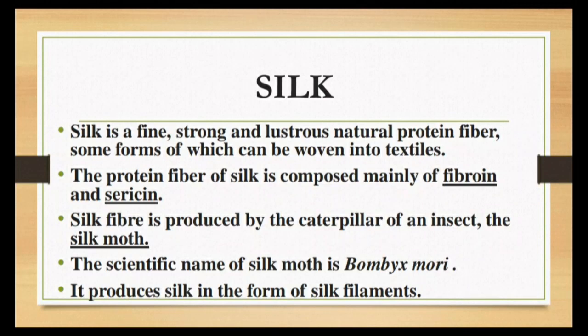Silk is a very fine, strong and lustrous — that means a very shiny appearance — type of natural protein fiber, some forms of which can be woven into textiles. The protein fiber of silk is composed mainly of fibroin and sericin. You have to remember these protein names: fibroin and sericin.